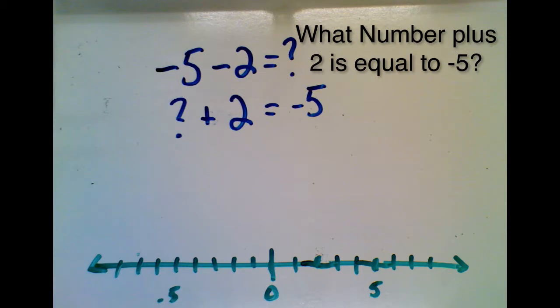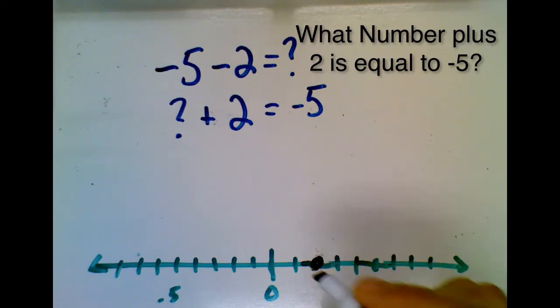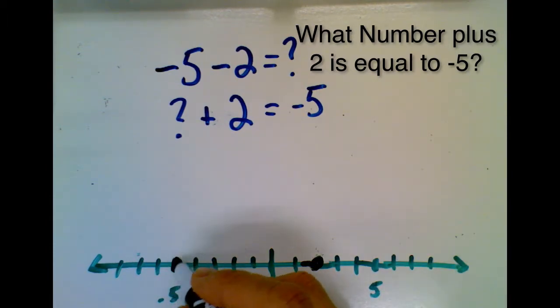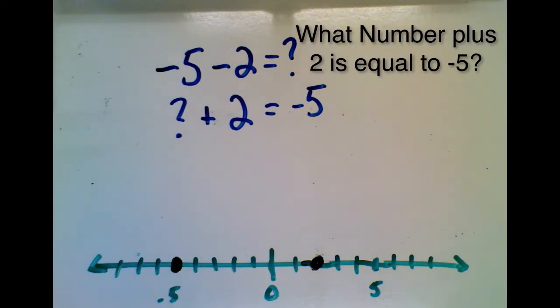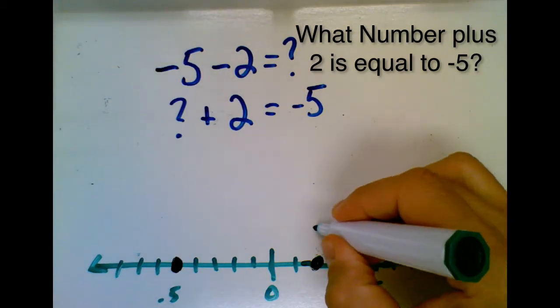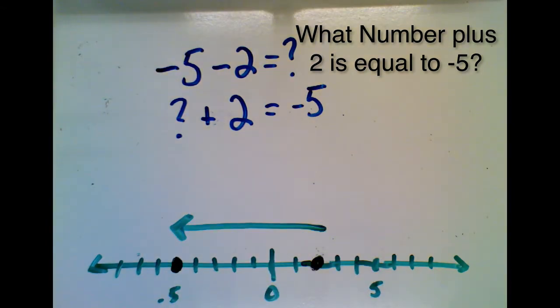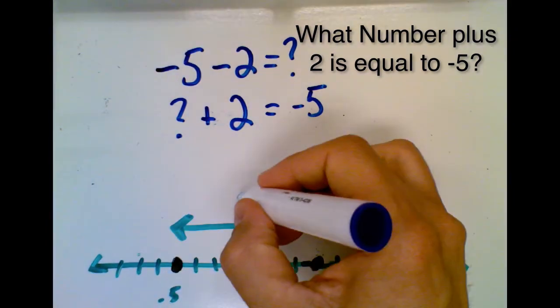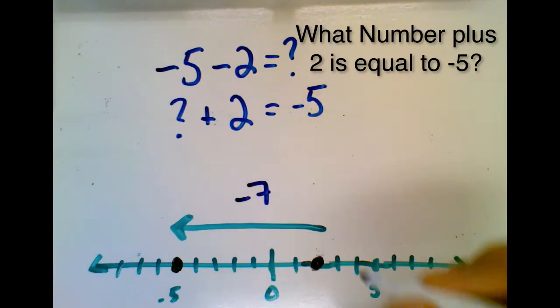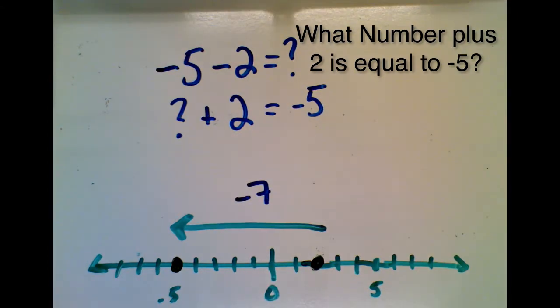So once again, we put our values on the number line. And we have our 2 right here. And we have negative 5 right here. And how do we get from 2 to negative 5? We go to the left. As it turns out, we go to the left 7 spots. And so our answer is negative 7.